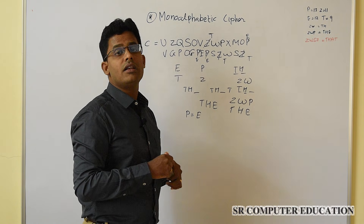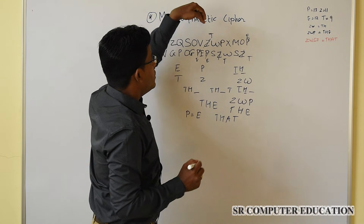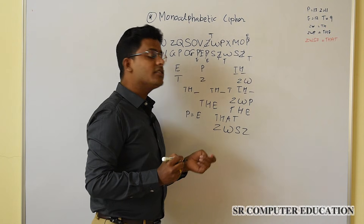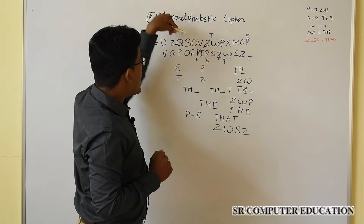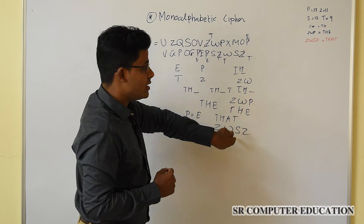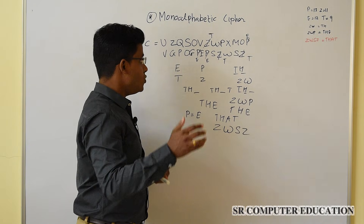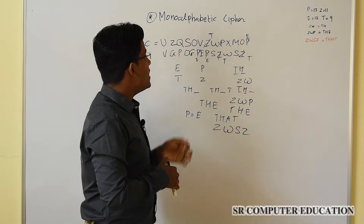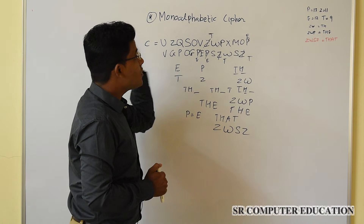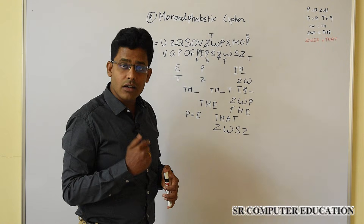The most common four letters used together in English is T, H, A, T — 'that'. From this, wherever Z is used in the cipher text it is T, wherever W is there it is H, wherever S is there it is A, and wherever Z appears again it is T. When you apply this to the entire cipher text, you will get the whole plain text as sent by the sender. This is how the cryptanalyst breaks the cipher using frequency analysis.